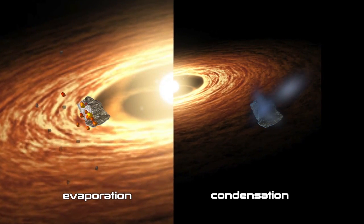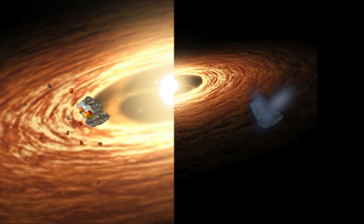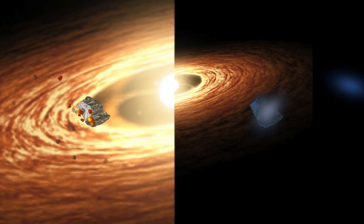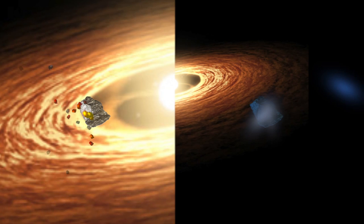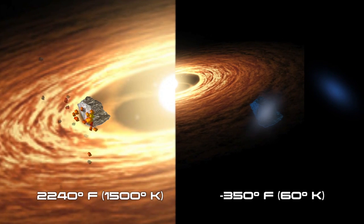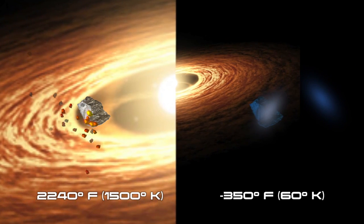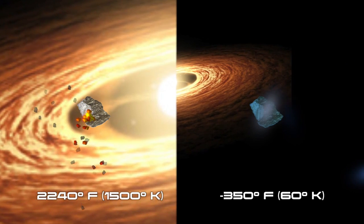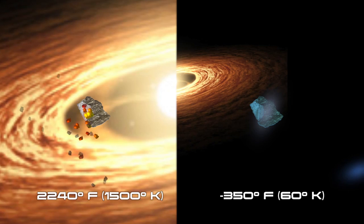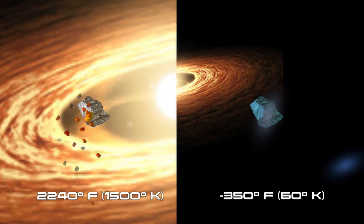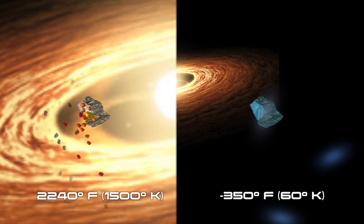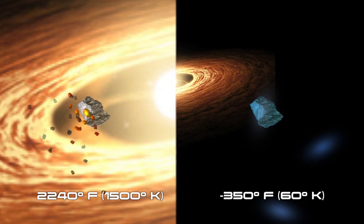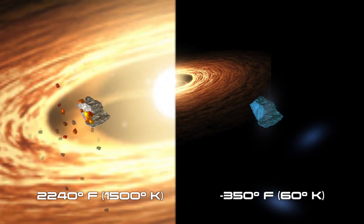Isotopes are different varieties of the same element. Temperatures ranged from a frigid minus 350 degrees Fahrenheit, or 60 degrees Kelvin, in the outer regions, to a scorching 2240 degrees Fahrenheit, or 1500 degrees Kelvin, near the center.